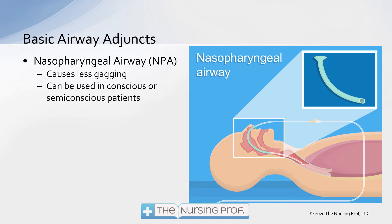The nasopharyngeal airway causes less gagging and can be used in our conscious or semi-conscious patient. If you look at the picture on the right, you can see how the placement goes — it's a soft rubbery tube placed in the nares, going down to the back of the oral pharynx, helping to hold the tongue and lower jaw away from the back of the throat so that we have an open airway going down into the patient's lungs.